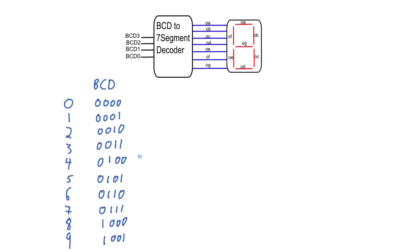These are all ten binary coded decimal numbers corresponding to the numbers they're supposed to represent. The difference between BCD and binary numbers is that with BCD we can only represent the numbers from 0 to 9. If you want to represent for example 37, you would use BCD number 0011 and BCD number 0111 to represent the 3 and then the 7 of 37.